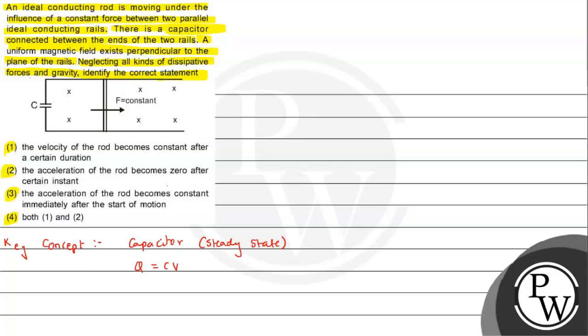Also we need to understand that whenever a conductor moves perpendicular to the uniform magnetic field, the EMF induced in it is given by the expression e equals to BVL. We are just recalling and listing down the terms and expressions we will use here.